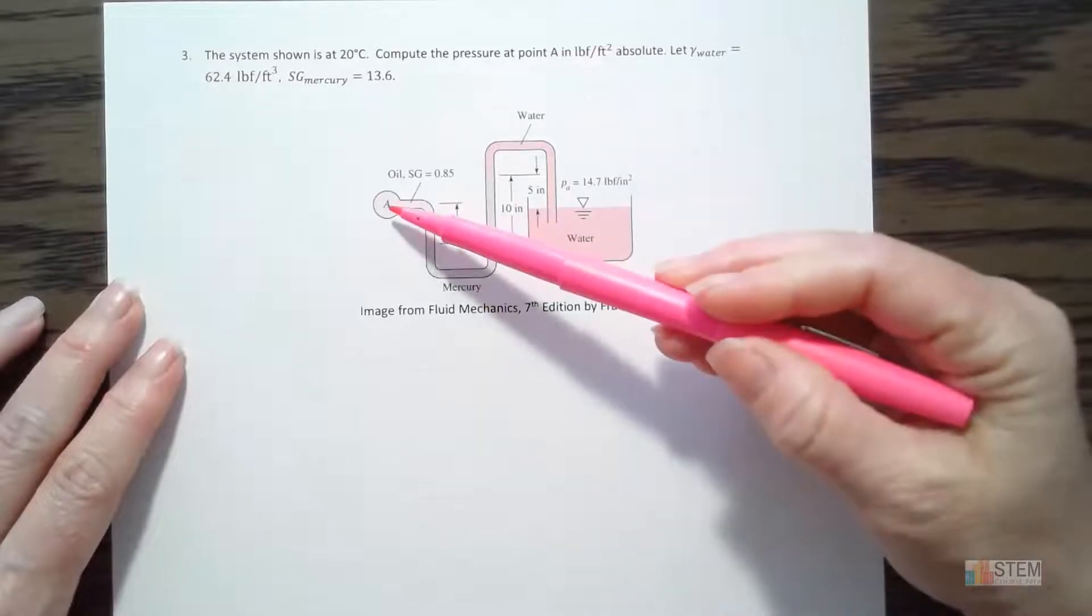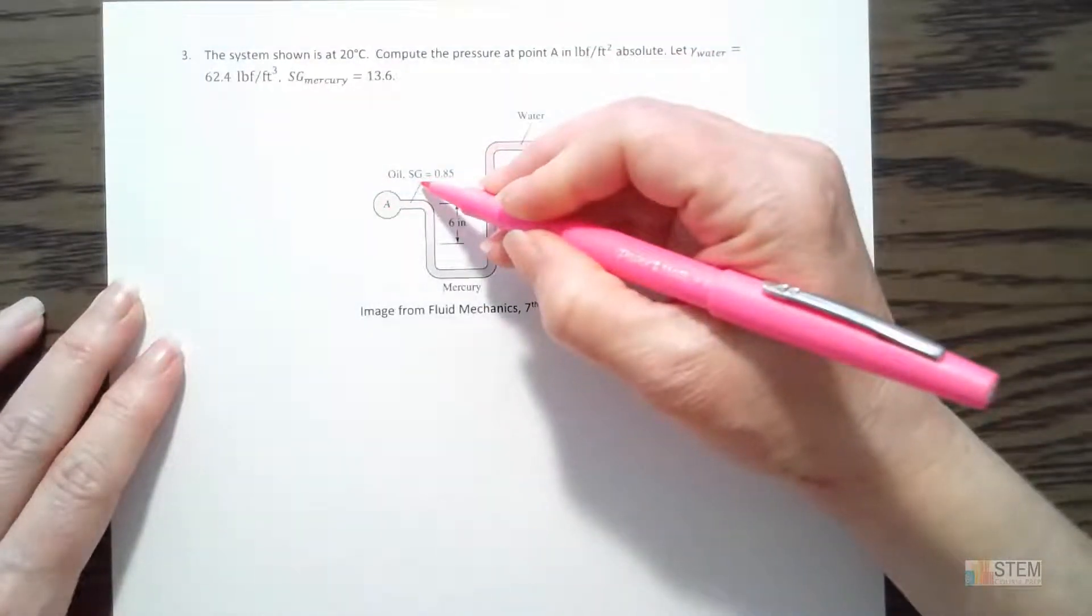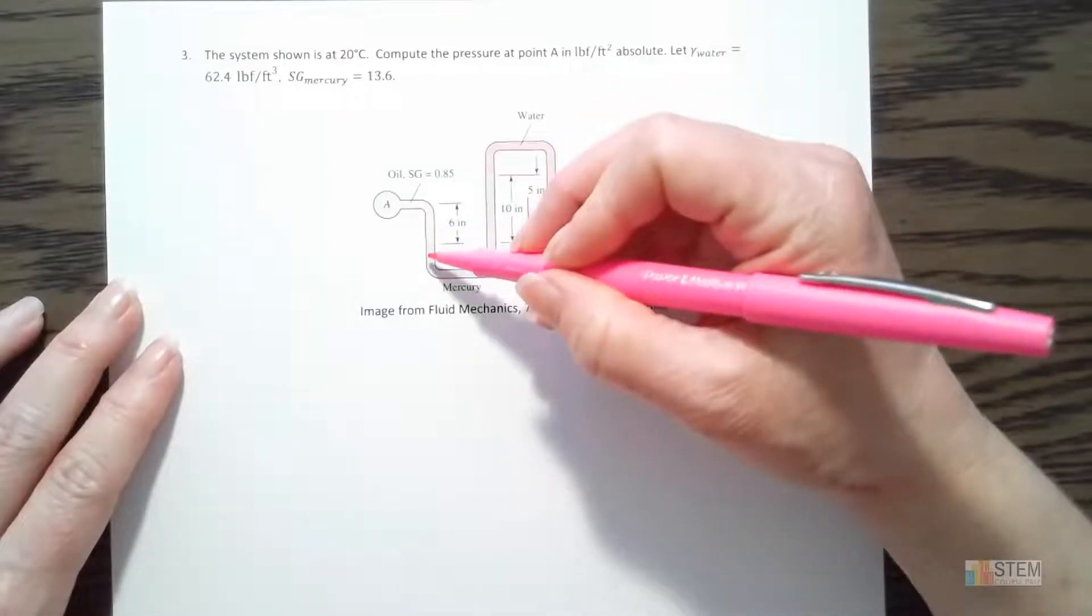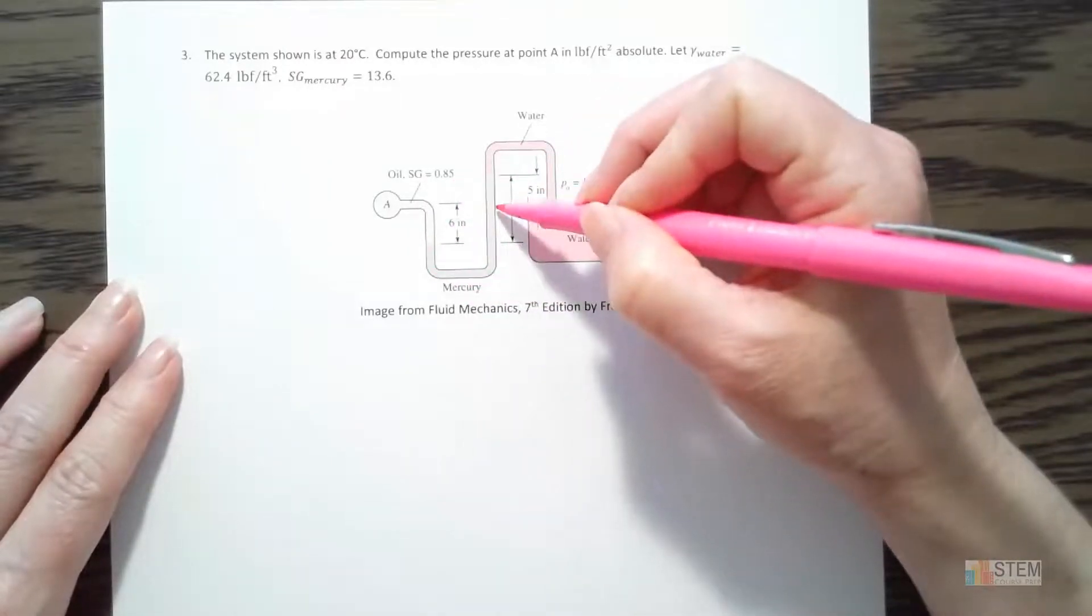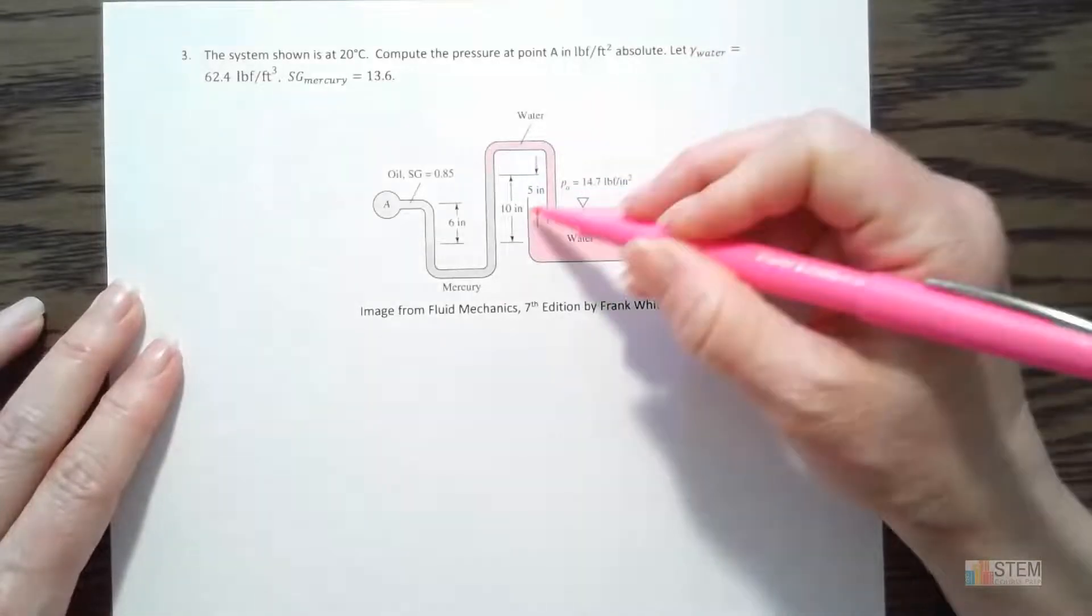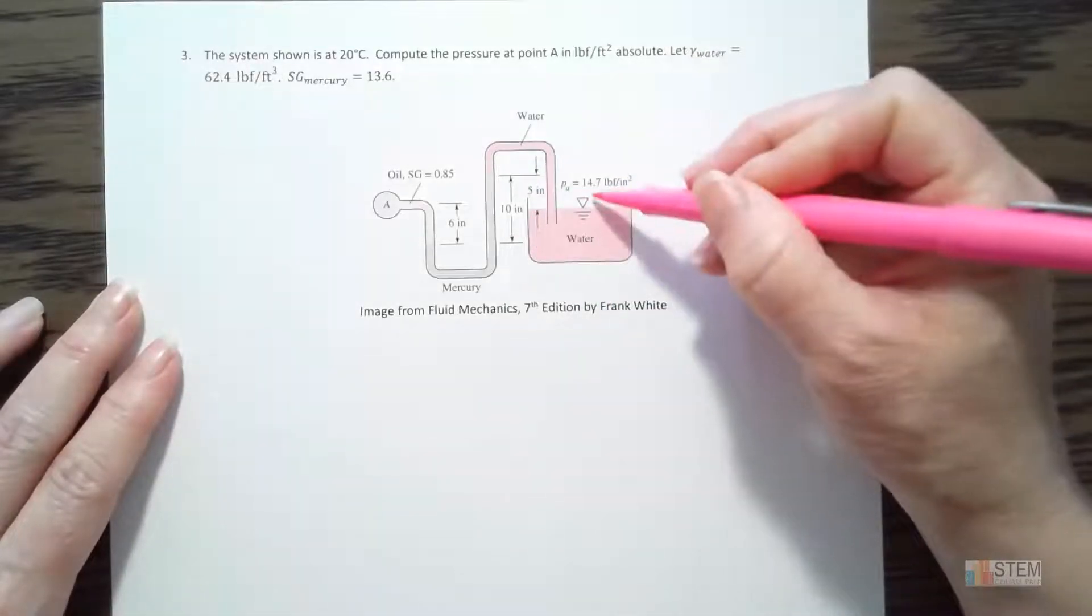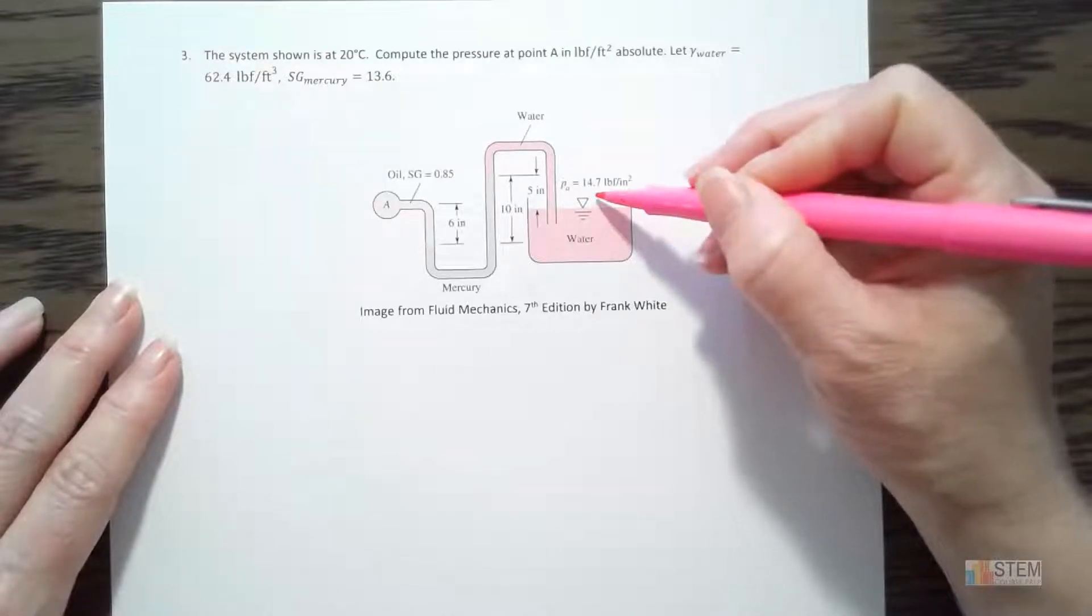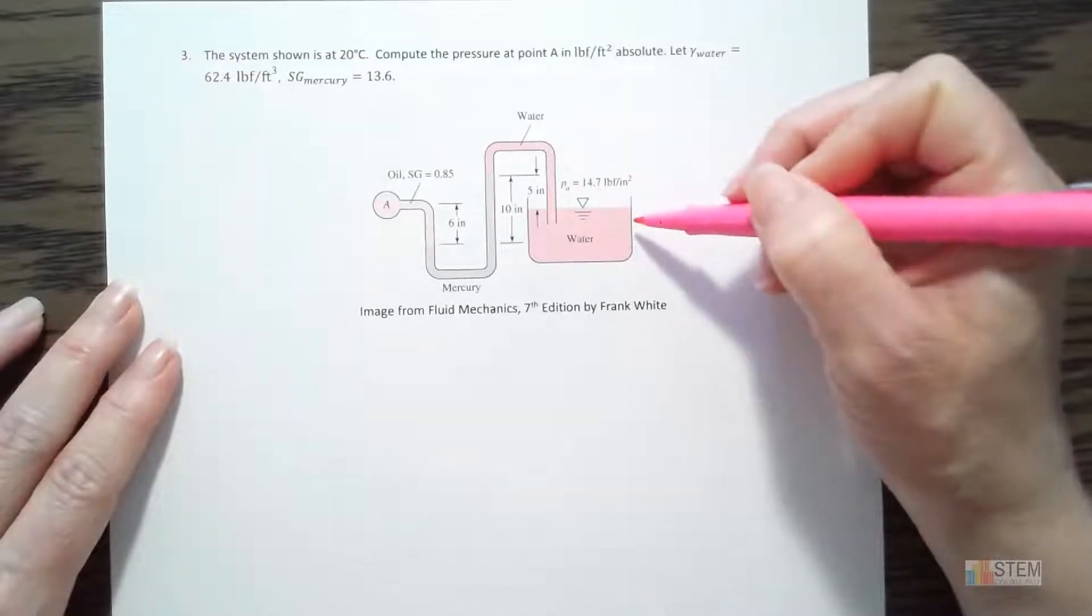We've got a manometer here. We start out with oil. We're given the SG value, the specific gravity value is 0.85, and then it switches over to mercury, and we've got water, and then we end up in this open tank here. So notice it's open. It's got atmospheric pressure pushing down on the surface of that water, and the atmospheric pressure there is 14.7 psi.